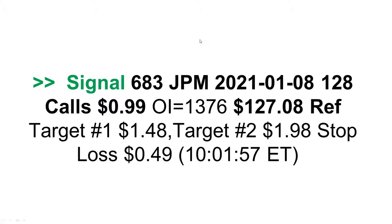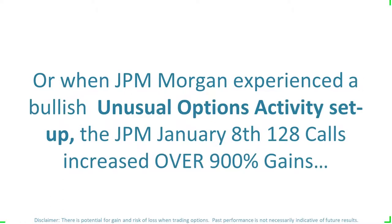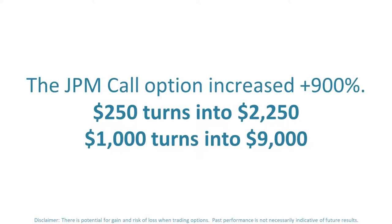Here's a J.P. Morgan signal: a trader buys the January 8th 128 calls for 99 cents — the right but not obligation to control 68,000 shares of J.P. Morgan through January 8th expiration. For that right, they paid about 99 cents. When J.P. Morgan experienced a bullish unusual option activity setup, the JPM January 8th 128 calls increased 900%. $250 turned into $2,250. $1,000 turned into $9,000.